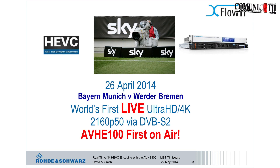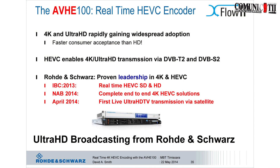We were chosen to broadcast the football match on the 26th of April — Bayern Munich against Werder Bremen — live at the Allianz Arena. This was the first live on-air transmission of a football match in 4K via satellite, using Grass Valley equipment. 4K and ultra-HD TV are becoming very widely accepted, and HEVC is the only realistic way to get ultra-HD transmitted anywhere. We've been the leader in 4K in studio and film post-production, and with HEVC we have a number of real firsts: first real-time showing of HEVC at IBC, complete end-to-end solution at NAB, and most recently, first live sports broadcast.